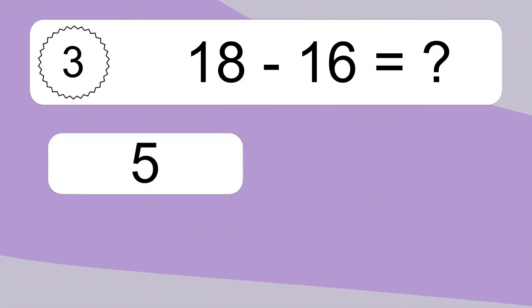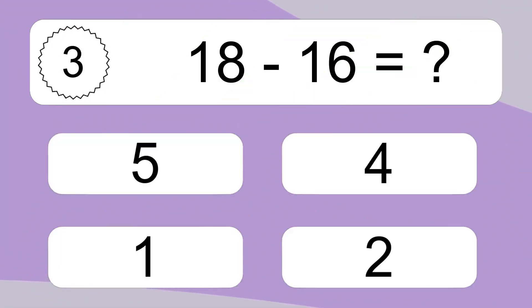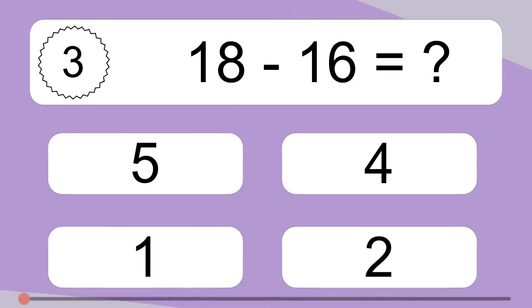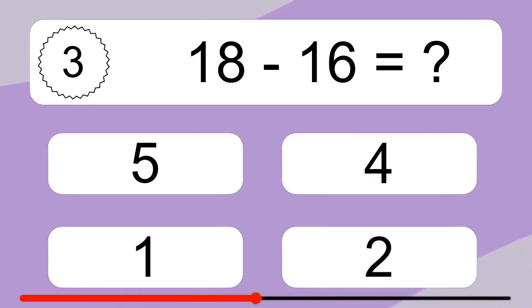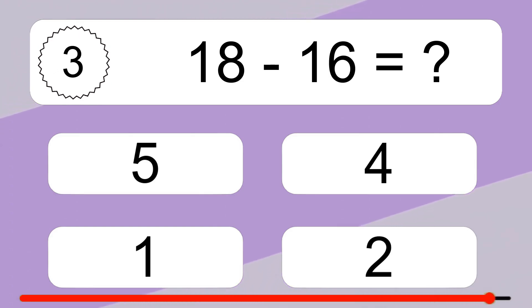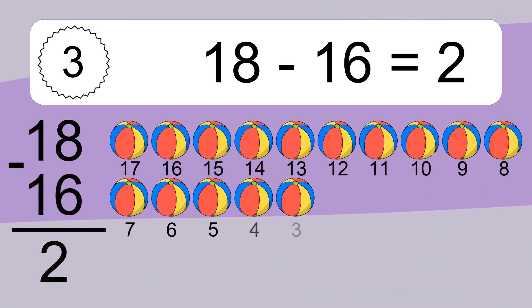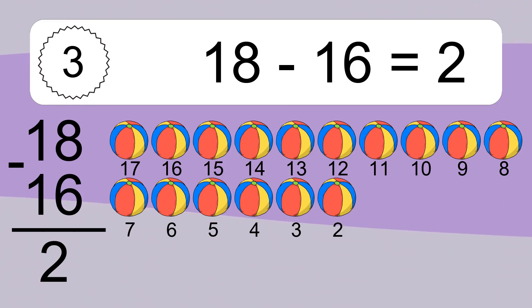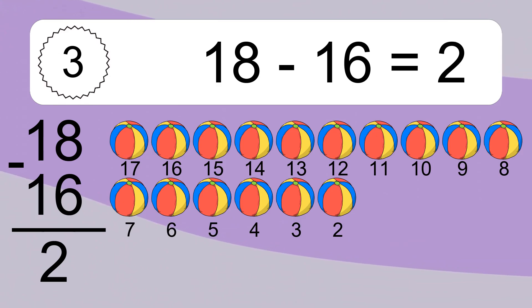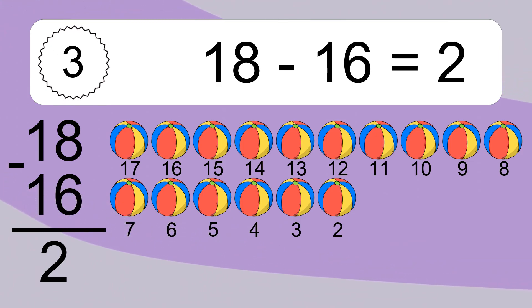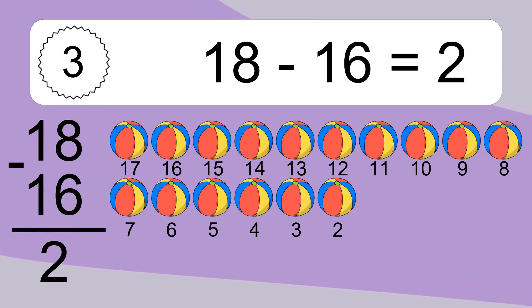18 minus 16 equals what? 18 minus 16 equals 2. Let's count it! 17, 16, 15, 14, 13, 12, 11, 10, 9, 8, 7, 6, 5, 4, 3, 2.